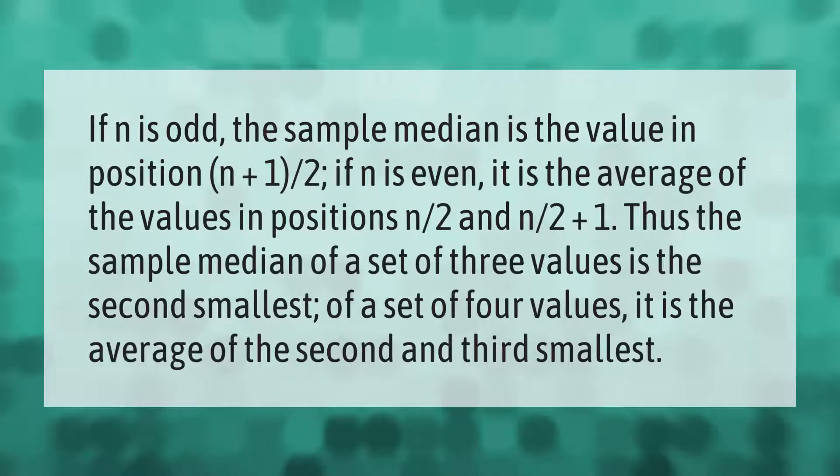If n is odd, the sample median is the value in position (n+1)/2. If n is even, it is the average of the values in positions n/2 and n/2+1. Thus, the sample median of a set of three values is the second smallest; of a set of four values, it is the average of the second and third smallest.